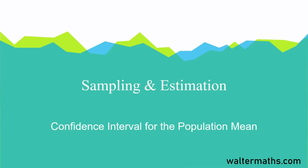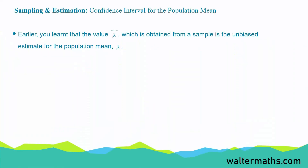In this lesson, we're going to be talking about the confidence intervals for the population mean. Now, in an earlier lesson, we were talking about unbiased estimates. We learned that the value of the capital mu, which is obtained from a sample, is the unbiased estimate for the population mean mu.